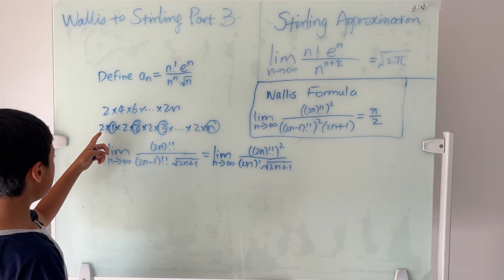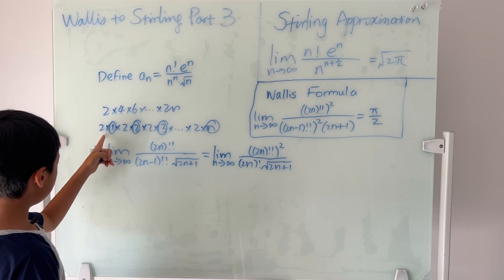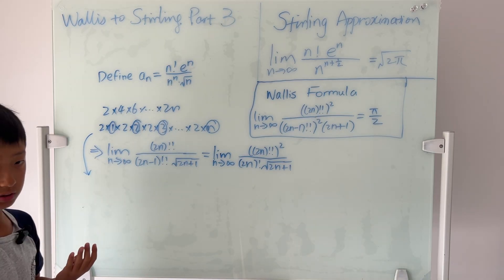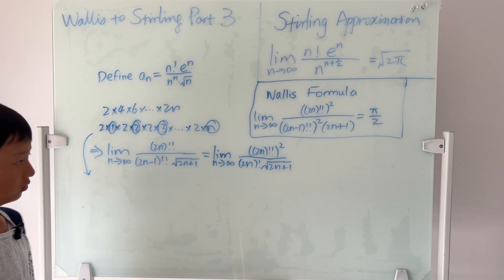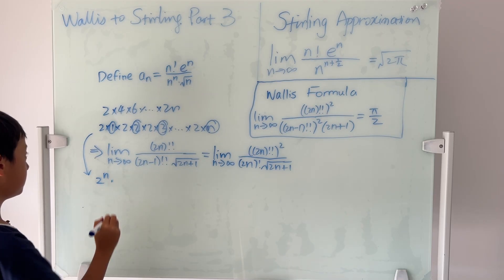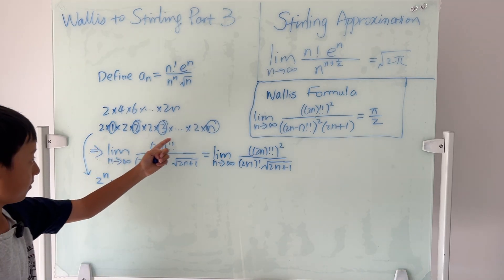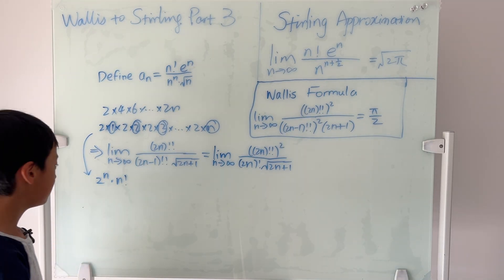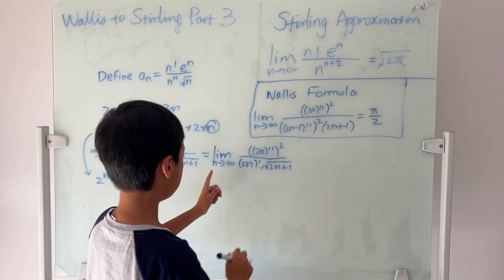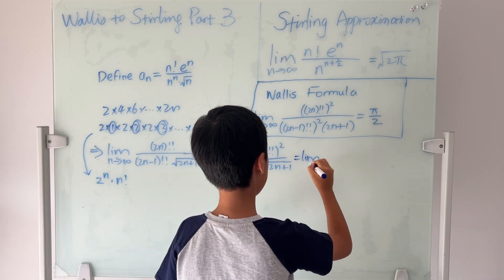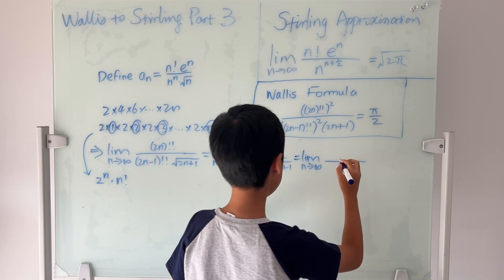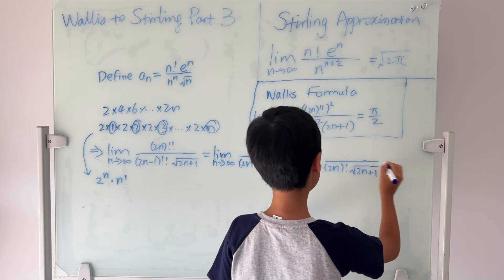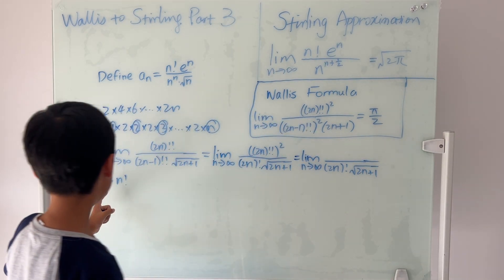Going back: we know that 2n double factorial squared, when we open the brackets, will be 2^(2n) times (n factorial) squared. So the limit becomes the limit as n goes to infinity — the bottom stays the same — and the top will be 2^(2n) times (n!)².